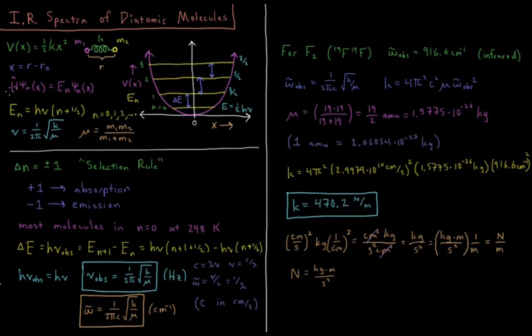In the previous video, we solved the Schrödinger equation H-psi equals E-psi for the energy levels of the harmonic oscillator, where our potential energy in the Hamiltonian was this one-half kx squared.